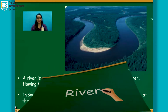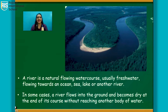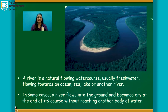River. A river is a natural flowing watercourse, usually fresh water, flowing towards an ocean, sea, lake, or another river. In some cases, a river flows into the ground and becomes dry at the end of its course without reaching another body of water.